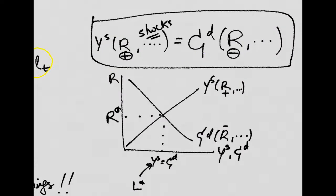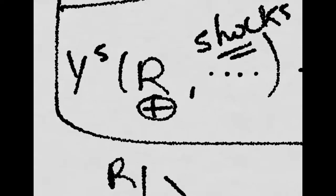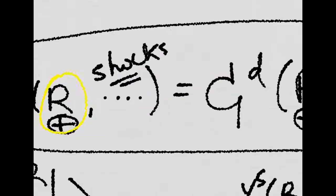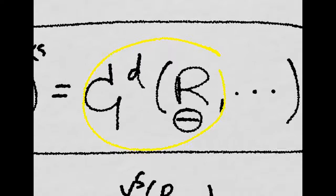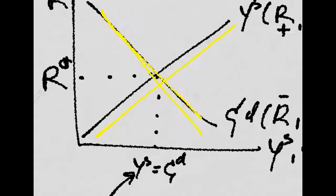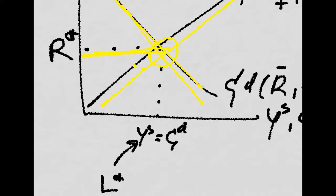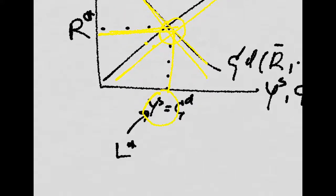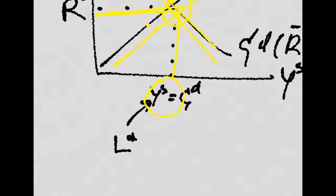If we draw it out, production depends positively on the interest rate and consumption depends negatively on the interest rate. So we have an increasing aggregate supply curve and a decreasing aggregate demand curve. That yields the equilibrium interest rate in the economy — the point where aggregate supply equals aggregate demand — and behind aggregate supply we have aggregate labor at equilibrium, in which all individuals are maximizing their utility.